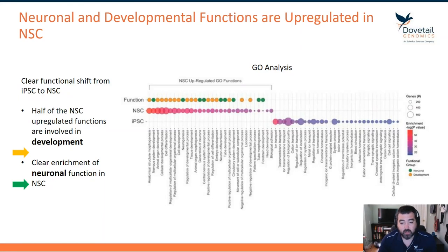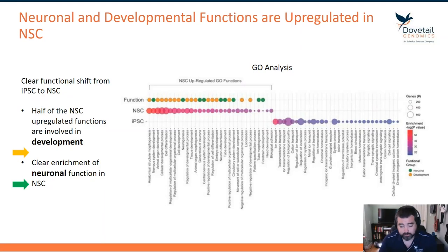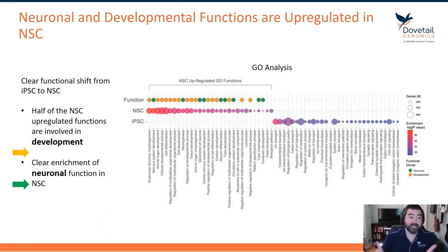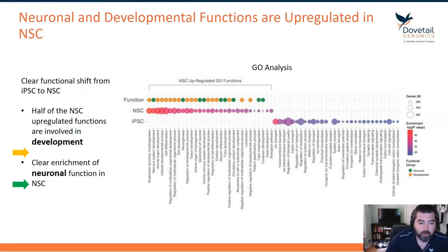What we can see across the board is that most functions upregulated in NSC cells are associated with either developmental or neuronal functions, compared to iPSC cells, which are mostly cellular maintenance and pluripotency maintenance. This confirms that our model system is in fact behaving as it should.